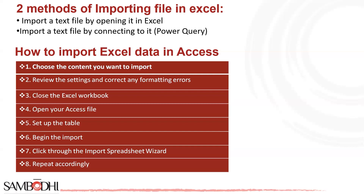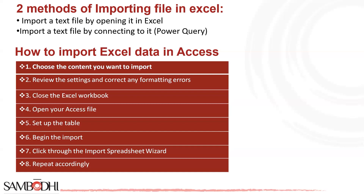Step two: review the settings and correct any formatting errors. Check the source data to ensure its compatibility with Access settings. Access can only support up to 255 columns, so check that the number of columns is below this limit. Convert the data into a table if it's not already in tabular form. Expect content in merged cells to appear left-aligned, and check for any error values and replace them with correct data. Step three: close the Excel workbook. If your document is in use, it might slow down your import operation. To minimize the risk of errors, shut down the file — this allows Access to import your data cleanly.